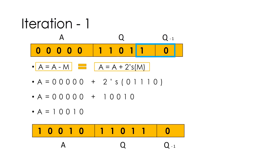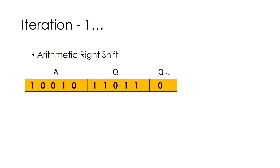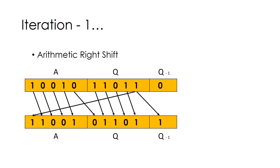Now we need to perform arithmetic right shift — shifting the bits to the right by one place. The trailing 1 moves to the first position and all other bits shift right. While performing arithmetic right shift, we consider only the combined values of A and Q.